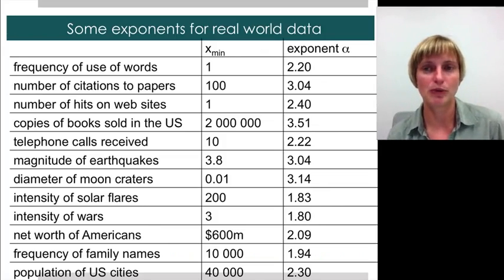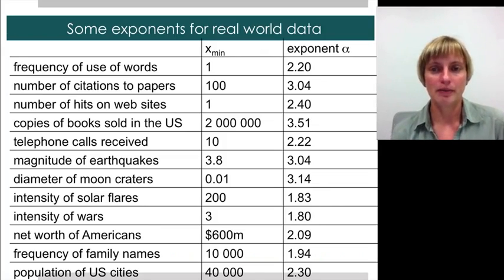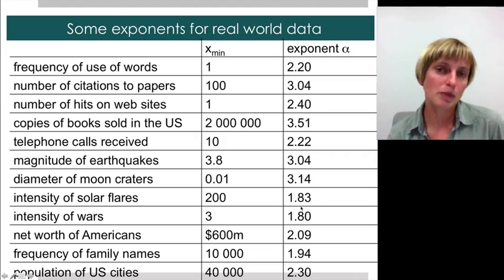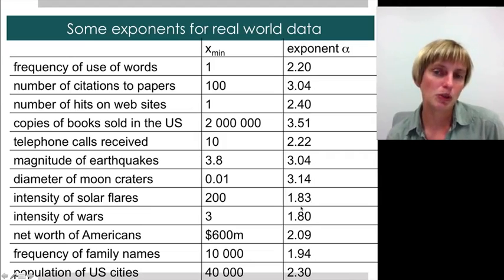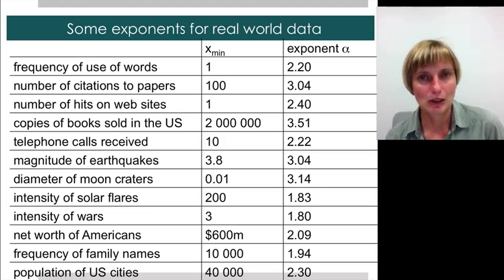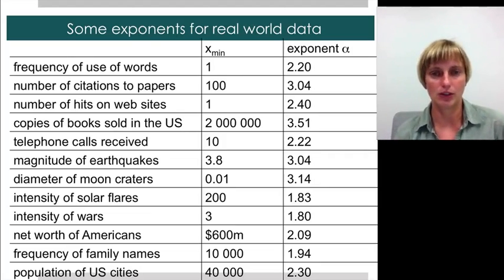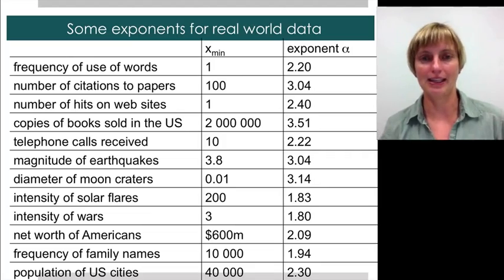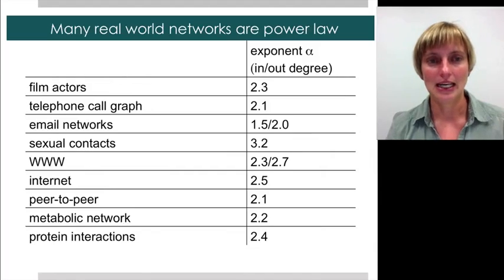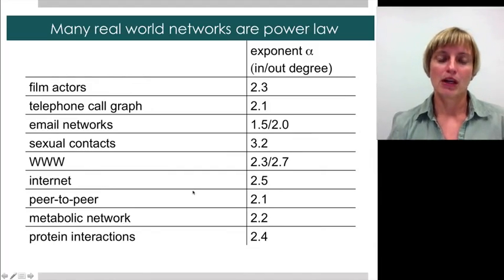Here are some exponents for real-world data. Most of them tend to be between 2 and 3, but some drop a little bit below 2. This is weird because those distributions would have kind of infinite variance, so most likely they have a drop-off — the power law can't extend indefinitely.